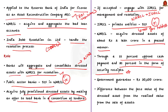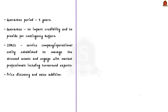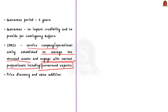The stressed assets will be acquired through a 15% upfront cash payment and 85% in the form of security receipts. The Cabinet cleared a proposal to provide a government guarantee worth ₹30,000 crores to security receipts issued by NARCL. The difference between the face value of the stressed asset and the realized value from the sale or liquidation represents the guarantee offered by the government, valid for five years. This guarantee is given to impart credibility and to provide a contingency buffer. IDRCL is a service entity established to manage stressed assets and engage with market professionals, including turnaround experts, for price discovery and value addition.